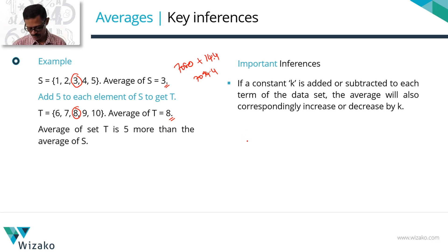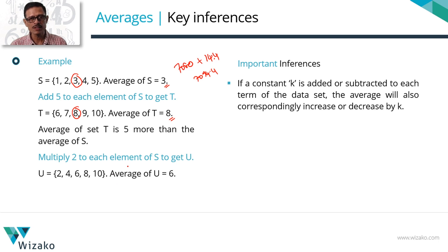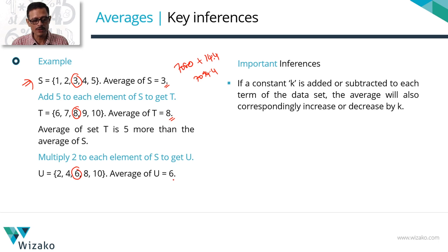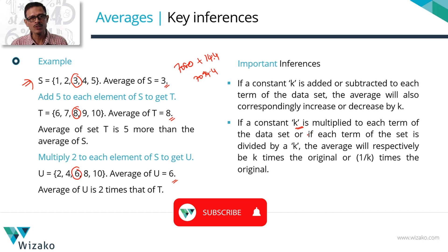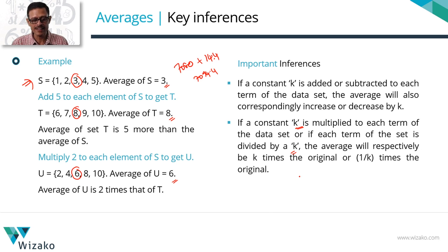What happens when you multiply or divide? Look at set U, obtained by multiplying each element of set S by 2: U = {2, 4, 6, 8, 10}. This is also an AP with common difference 2, so the middle number 6 is the average. We multiplied each element of set S by 2 and the average of U is twice the average of S. So inference 2: if each element in a set is multiplied by K, the average becomes K times the original average (Ka); if each element is divided by K, the average becomes a/K — one-K times the original average.